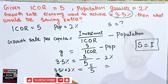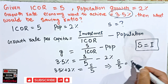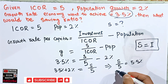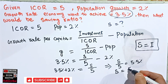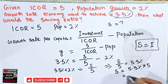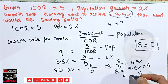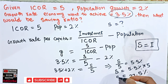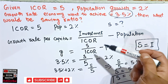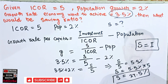So 3.5% plus 2% equals 5.5%, meaning s upon 5 equals 5.5%. Transposing the 5 to the right-hand side, s equals 5.5% multiplied by 5, which gives us 27.5%. So the saving ratio for the economy to achieve a growth rate of 3.5%, given population growth of 2% and ICOR of 5, is 27.5%.